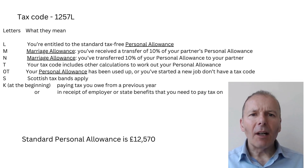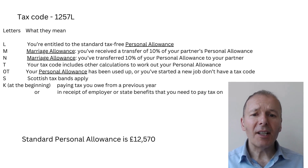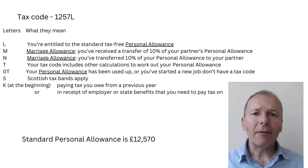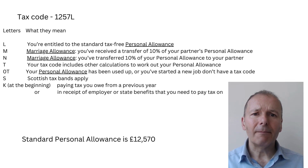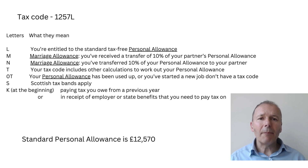A lot of people don't get the standard personal allowance. Some receive an additional marriage allowance, and some have amounts deducted from their personal allowance because they owe small amounts of tax from a previous year, or they receive benefits in kind from their employer such as free medical insurance. So your tax code might have a different number to 1257, and it might have a T at the end or a K at the beginning.